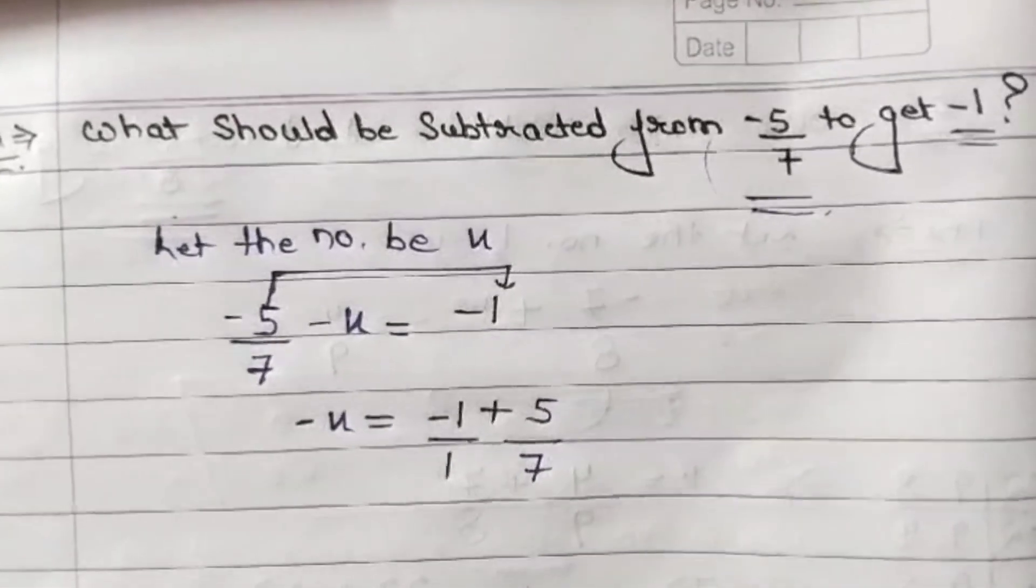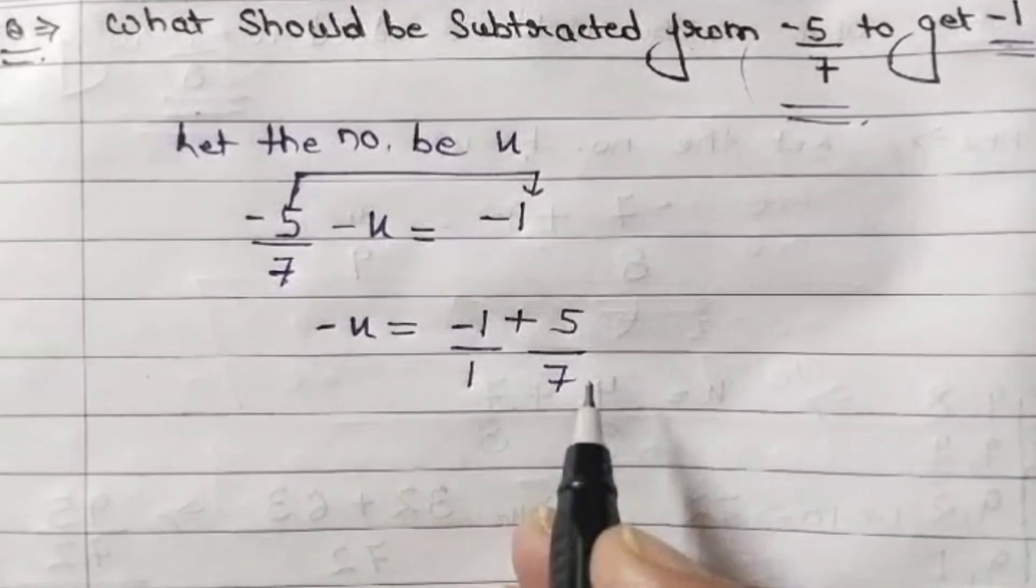Plus and minus makes minus. So this is what we are solving in this case when we have two rational numbers.